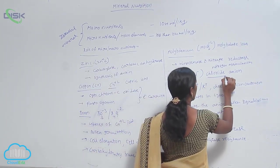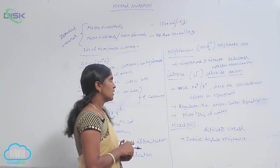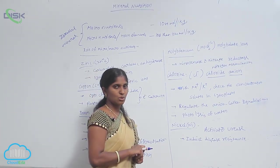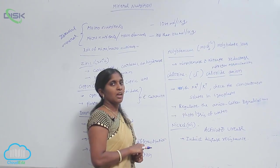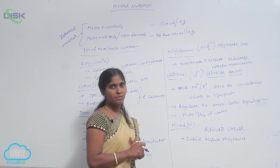The chloride anion present in stomata regulates the opening and closing of stomata with K+ ions.